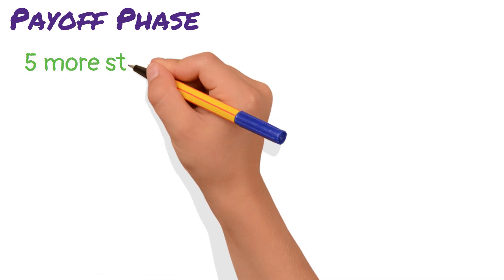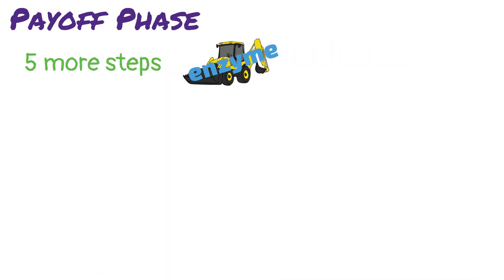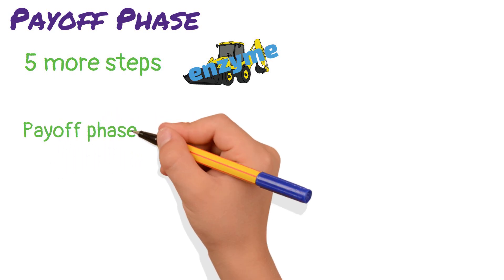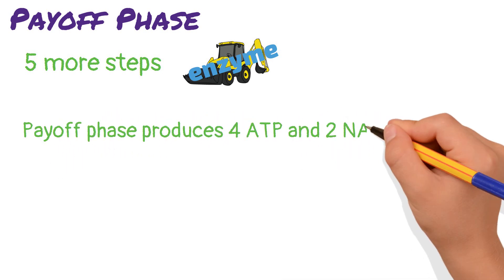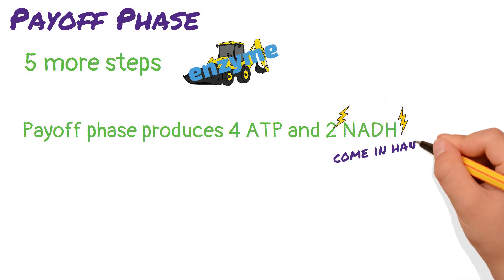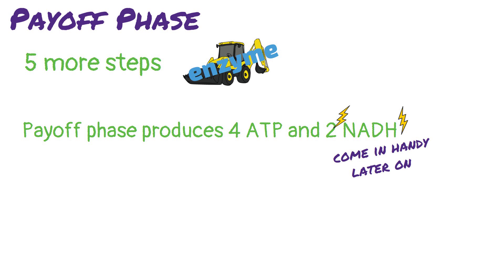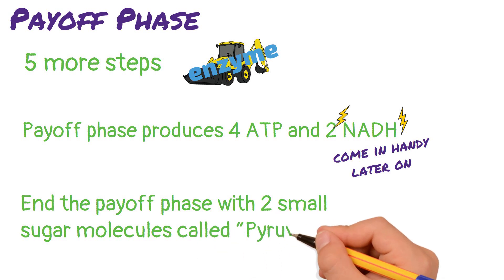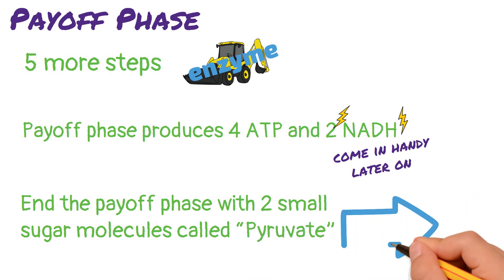There are five more steps in the payoff phase, each with their own enzyme to do all the work. The payoff phase produces four ATP and two NADH for each glucose. NADH is another energy carrier that will come in handy later on in the cell's energy production journey. We end the payoff phase with two small sugar molecules called pyruvate that will head into the next process in cellular respiration.